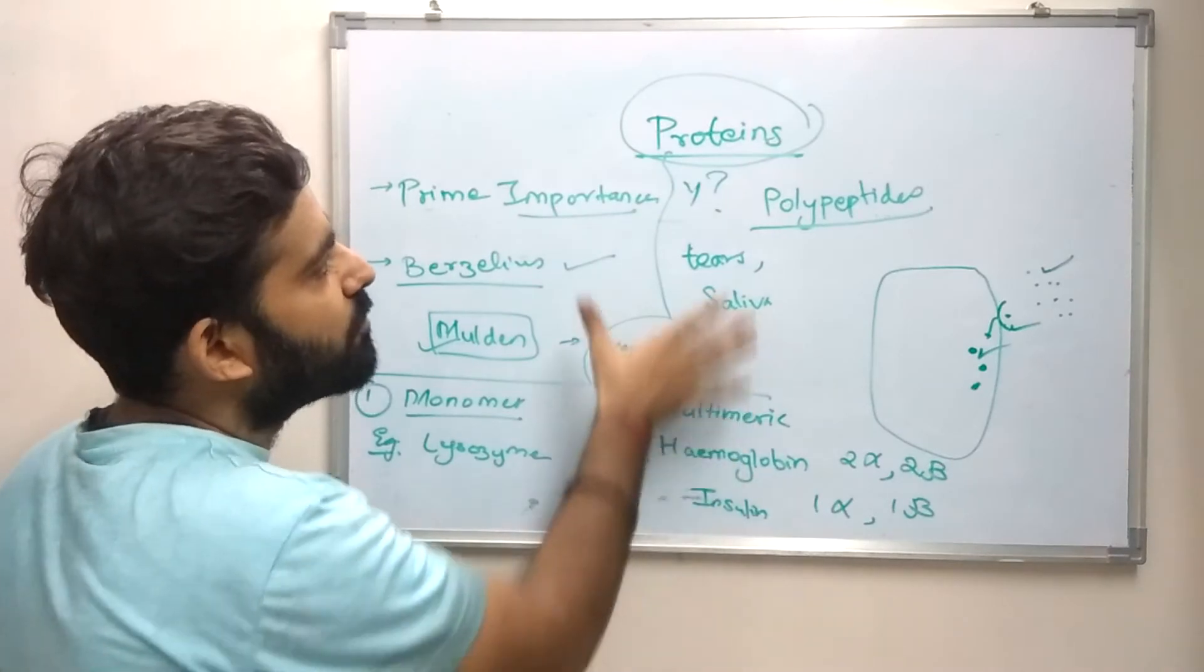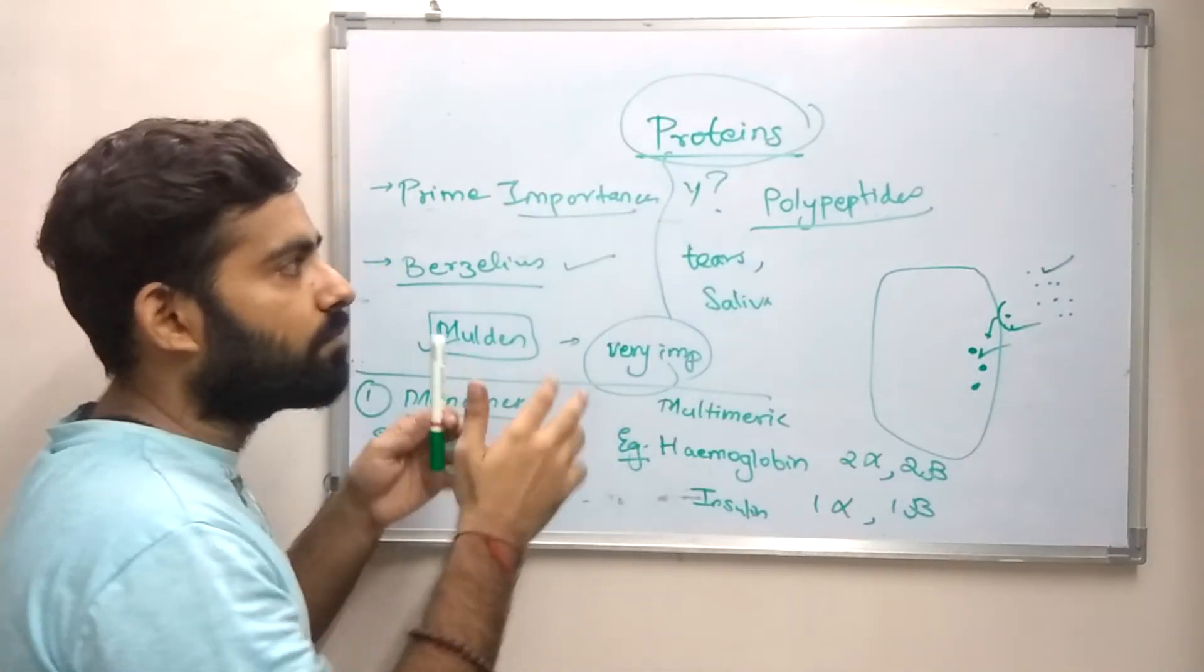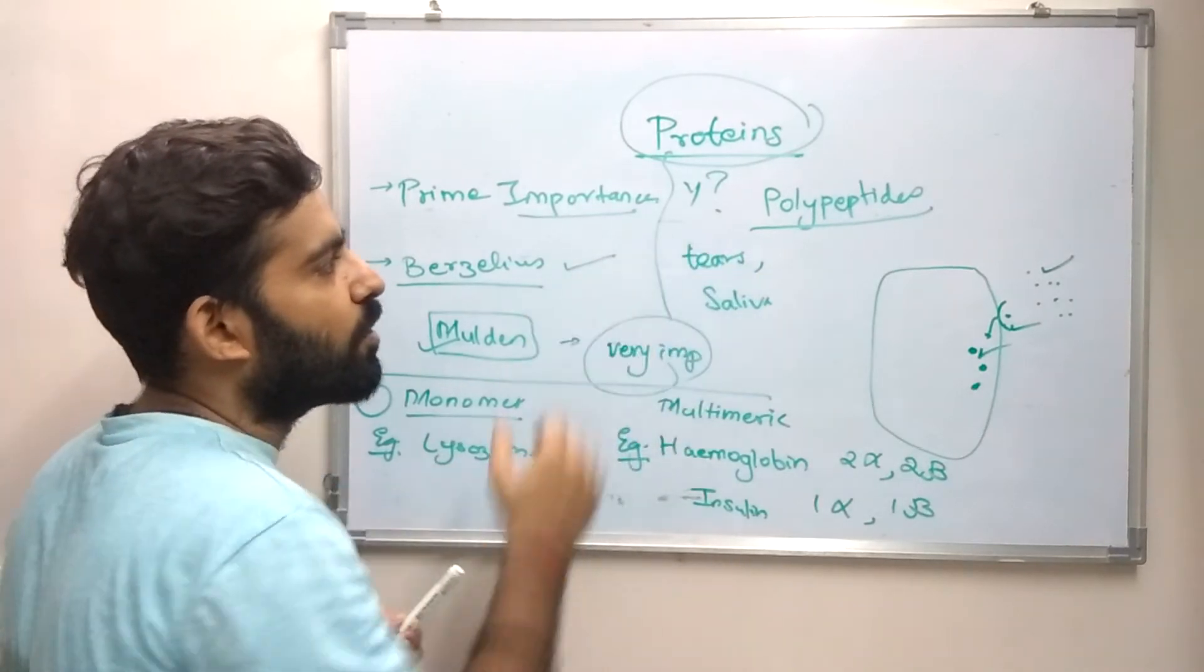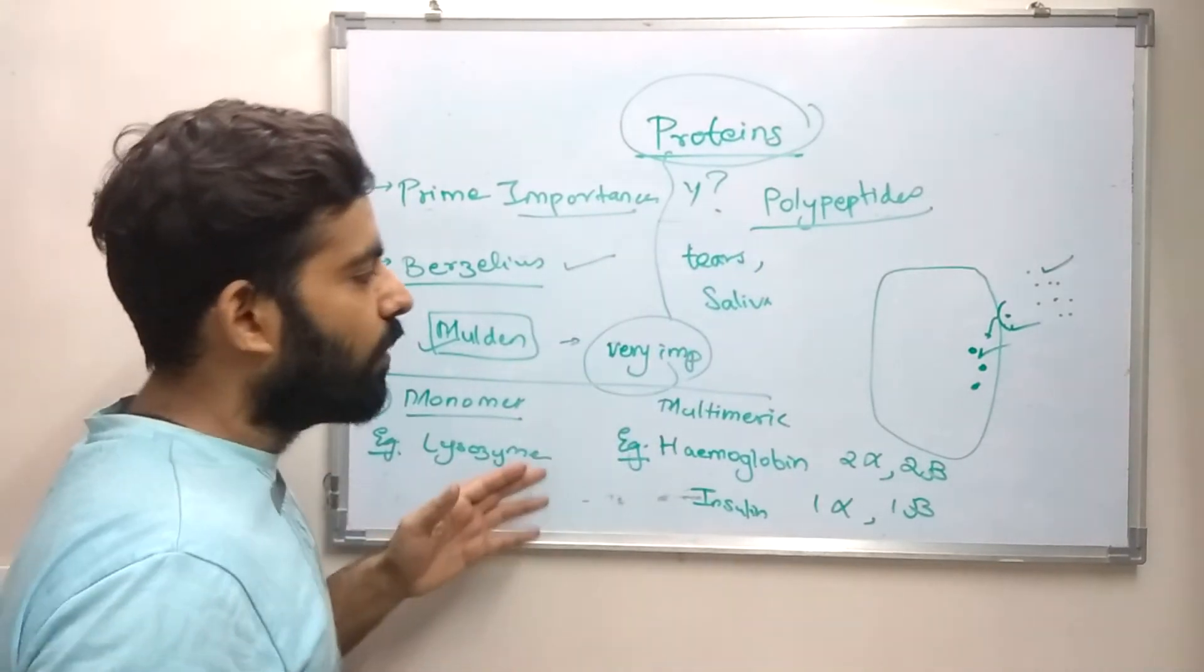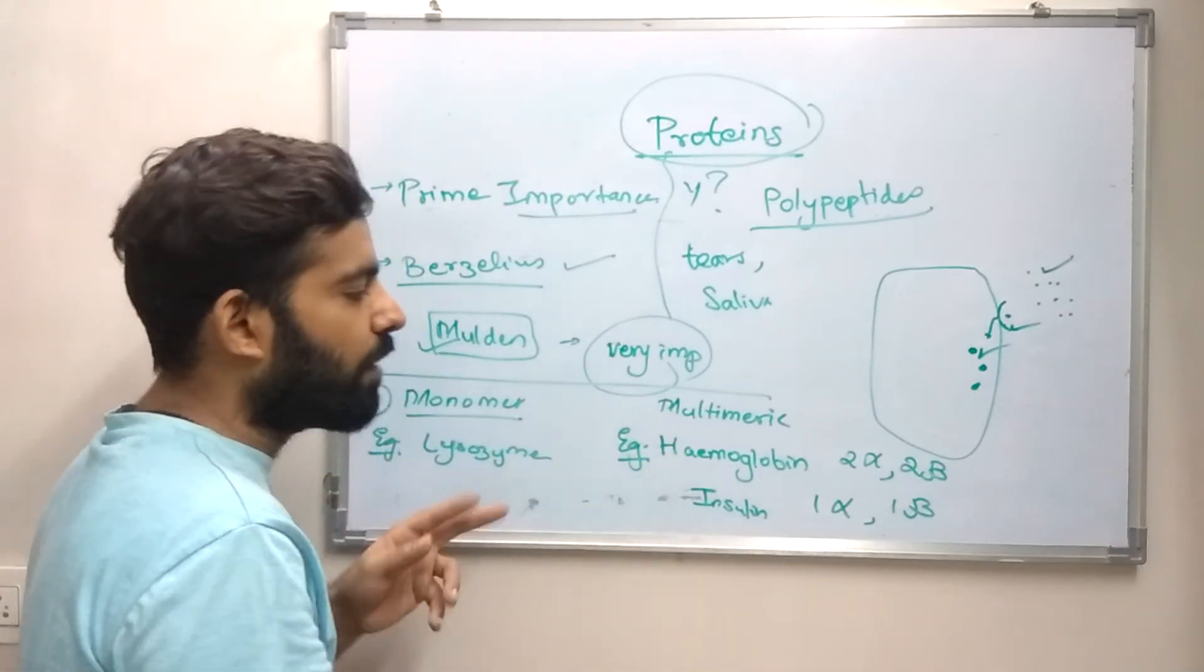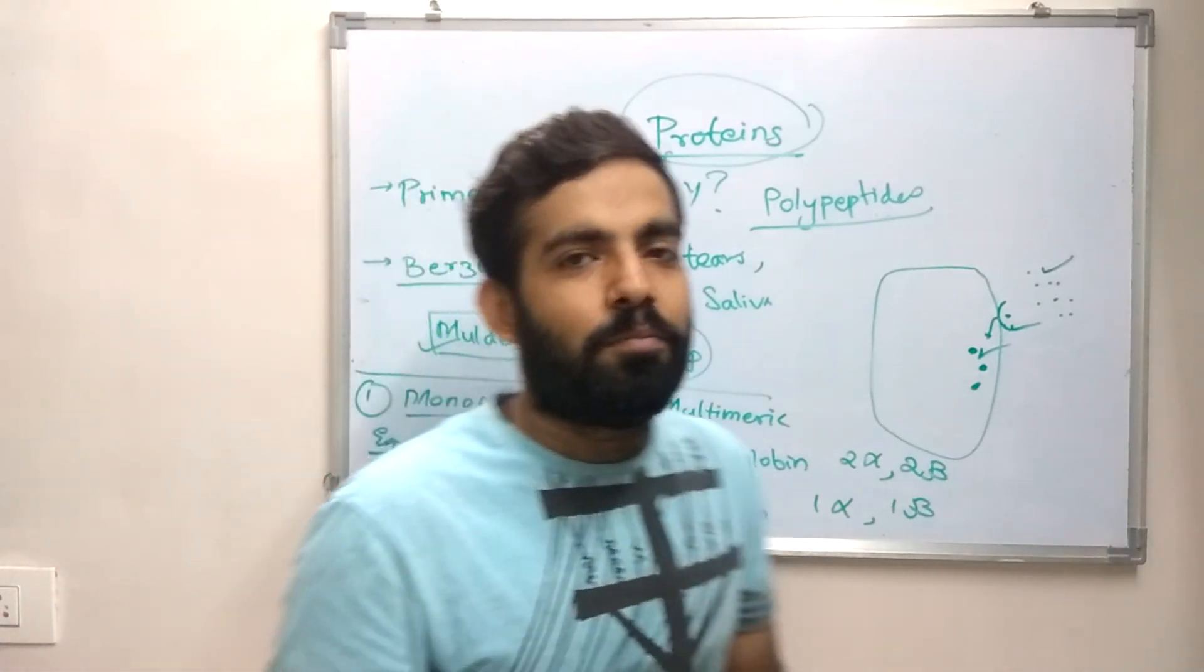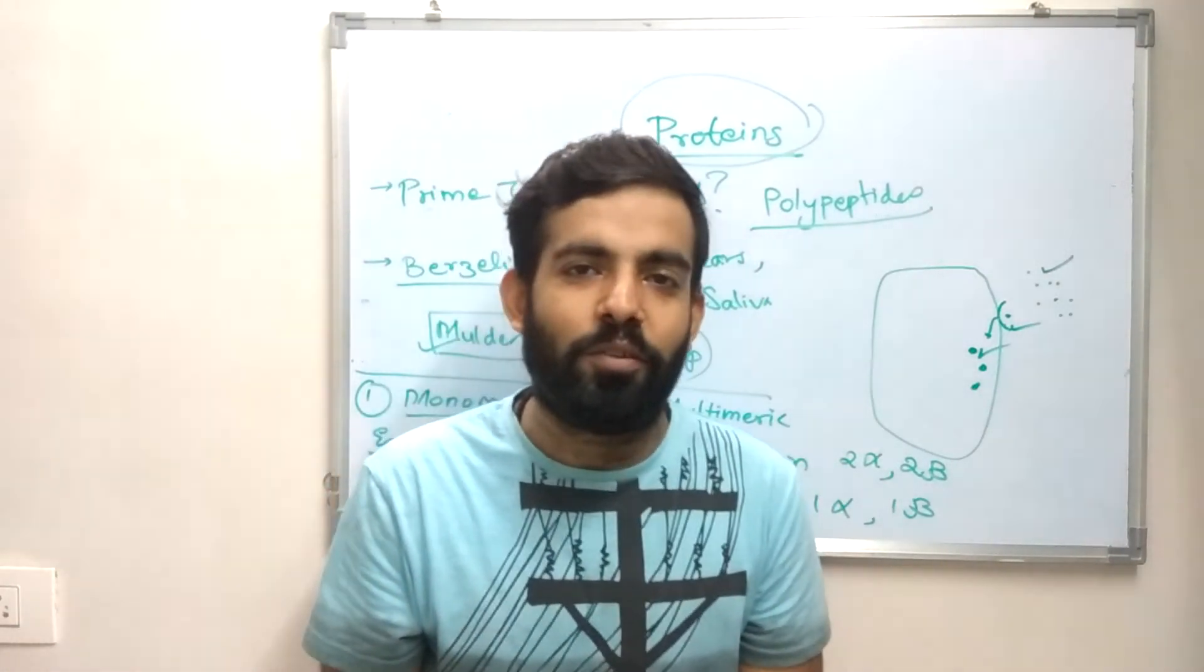So in this video lecture we have studied the prime importance of proteins and the classification of proteins on the basis of the polypeptide chains. Examples for monomeric and multimeric. So this was about the introductory video of proteins. If you like my lecture, please do like, subscribe, share. Thank you.